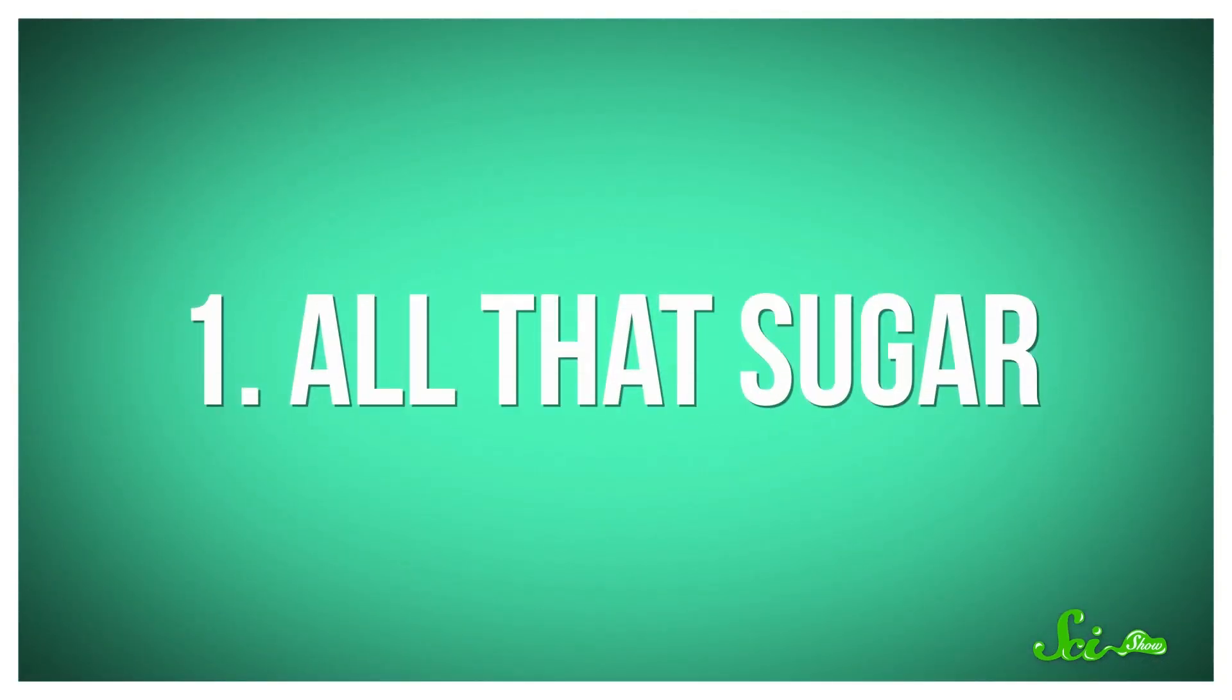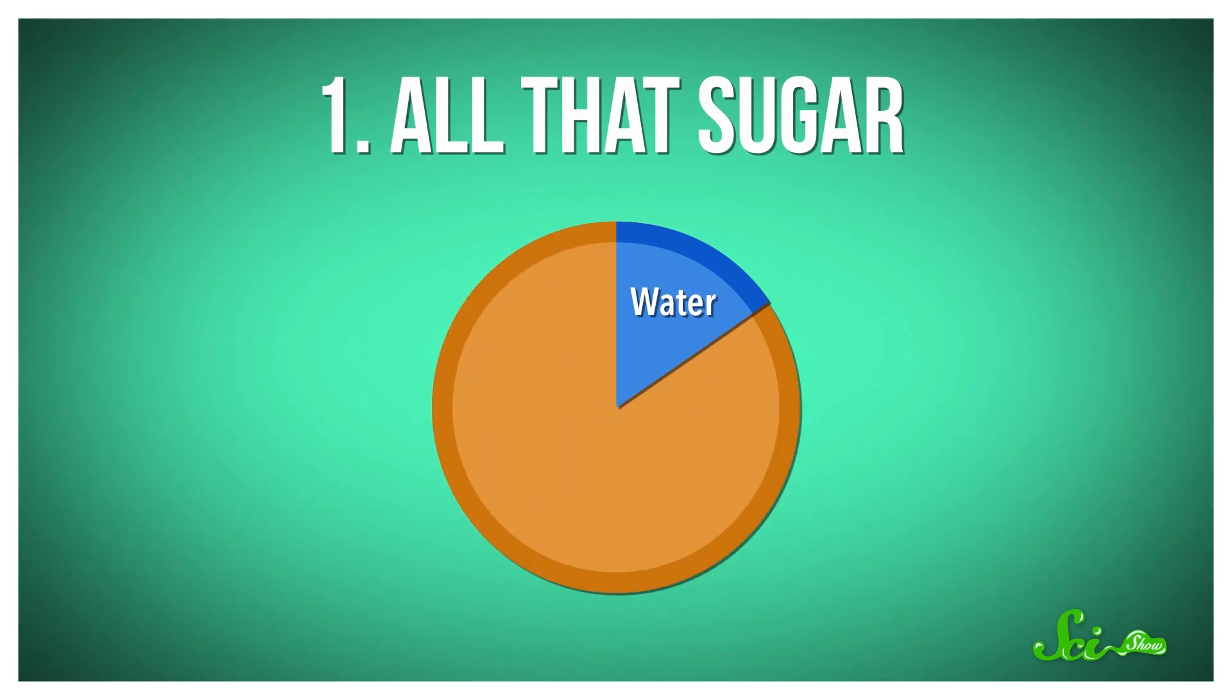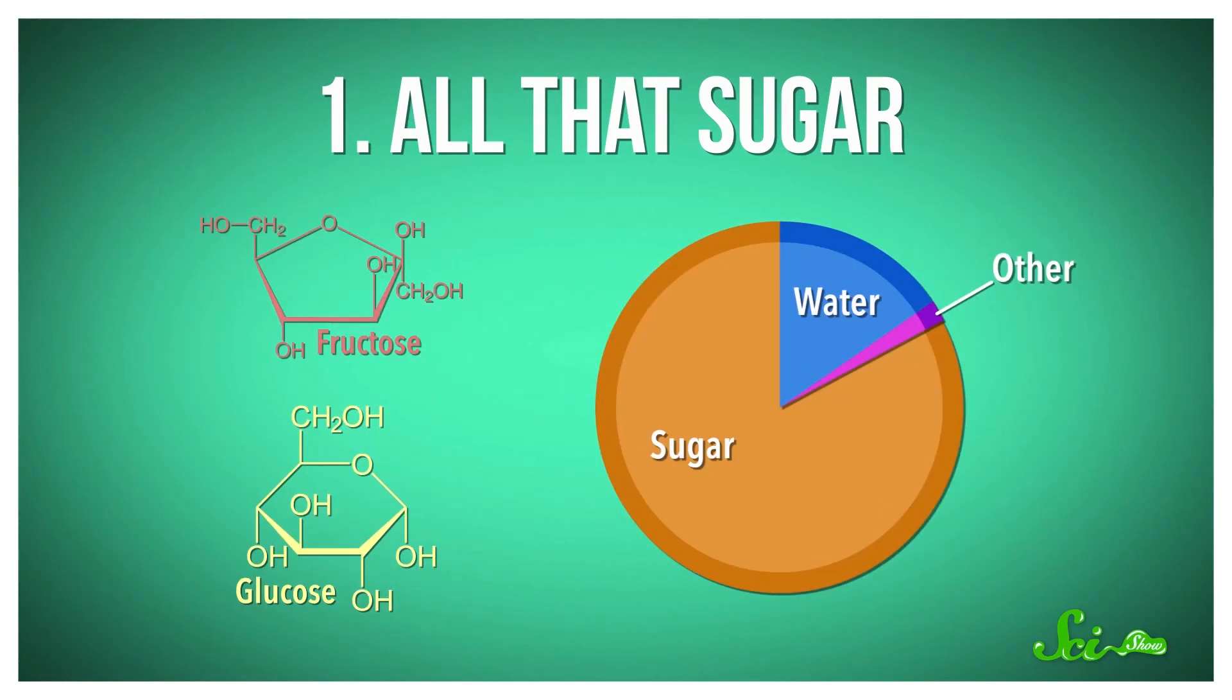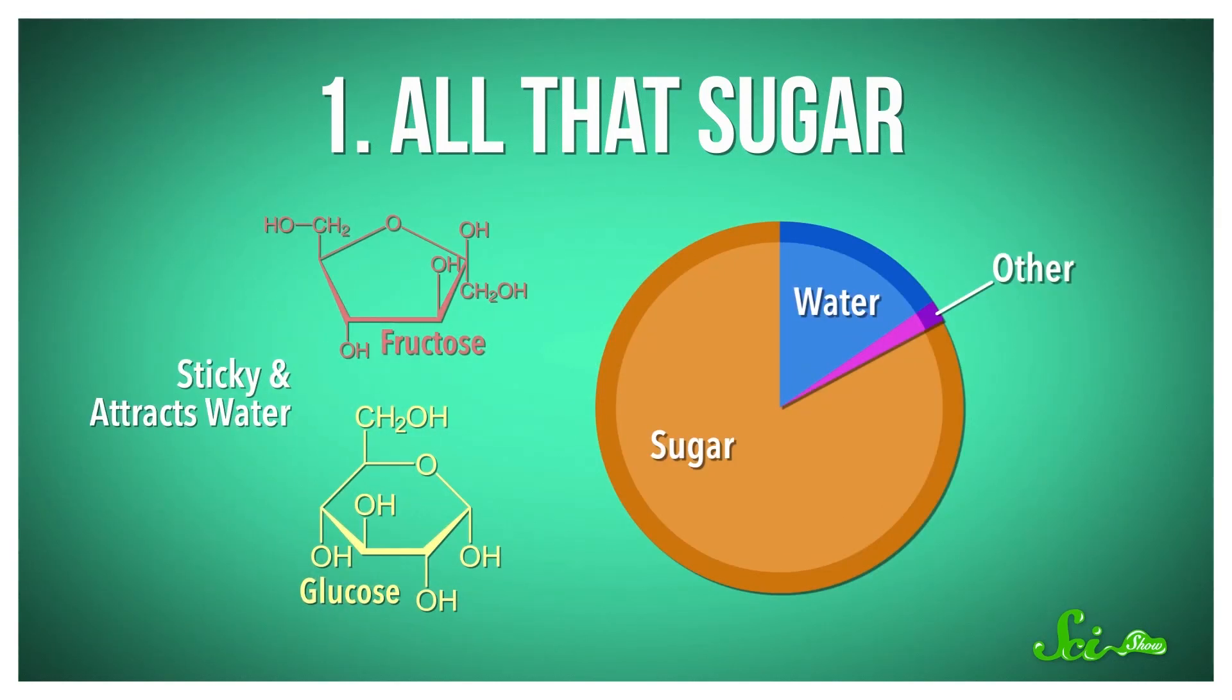The first is all that sugar. Honey is only about 17% water. Most, but not all, of what remains is sugar. The two main types of sugar in honey are glucose and fructose. Like all sugars, glucose and fructose are sticky. They attract water.